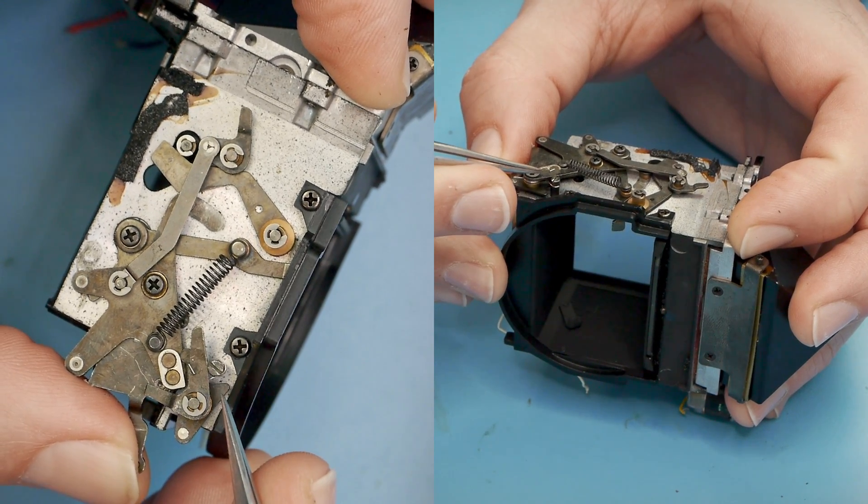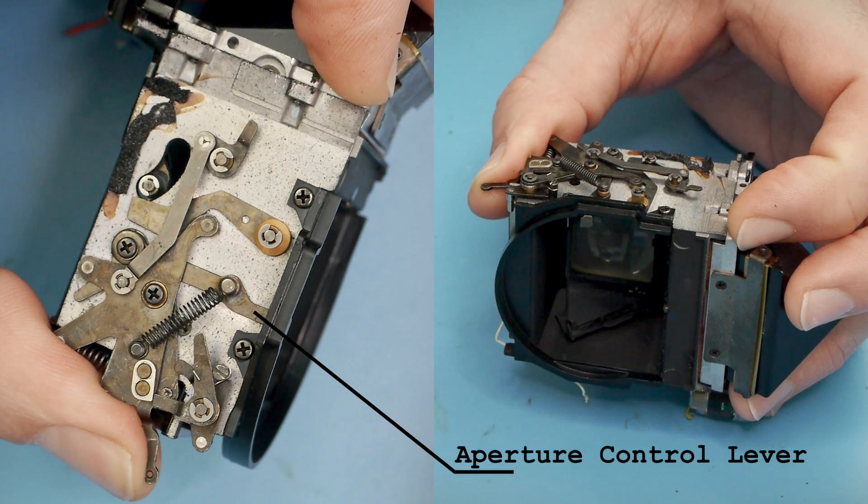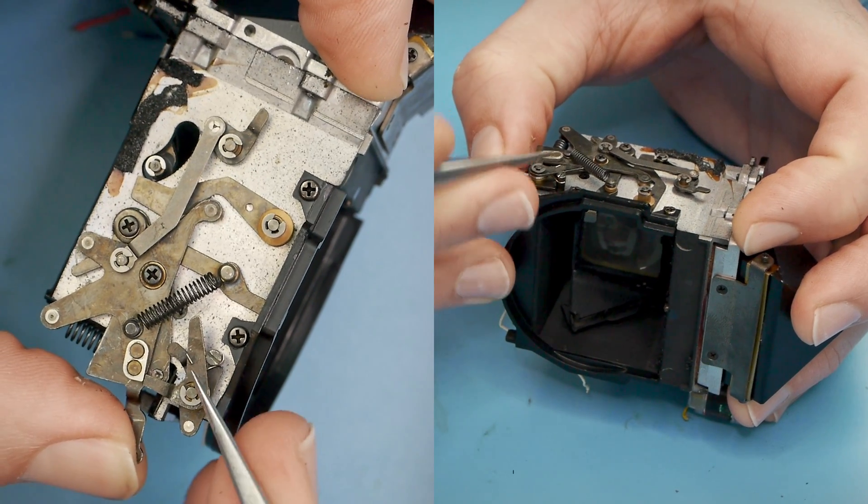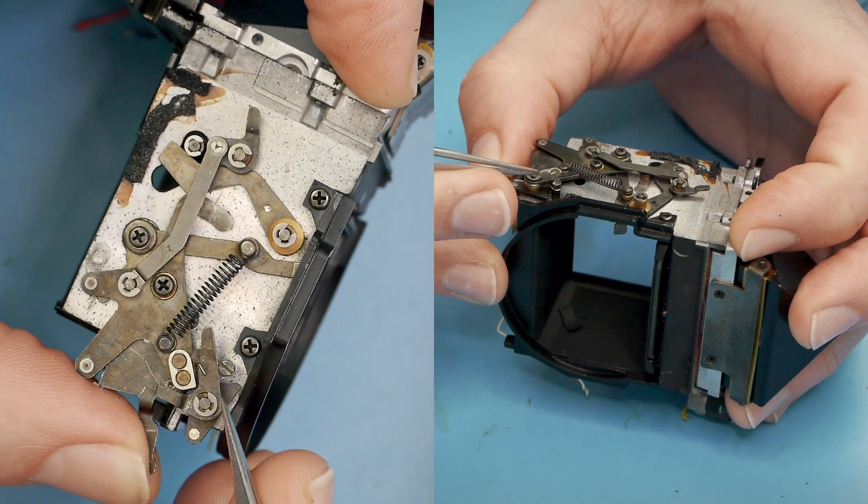And there's one more thing being driven by this mechanism, which is the aperture in the lens. When that lever there moves up, it will allow the aperture in the lens to stop down to the selected value. And that's a lot, packed into just a few square inches.